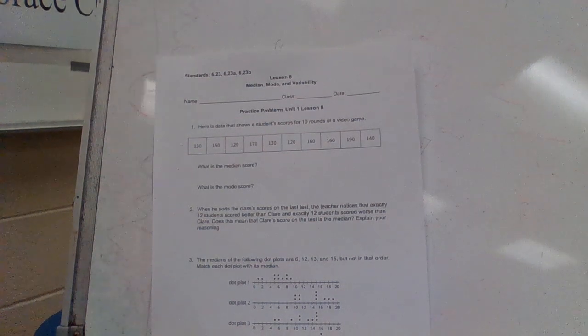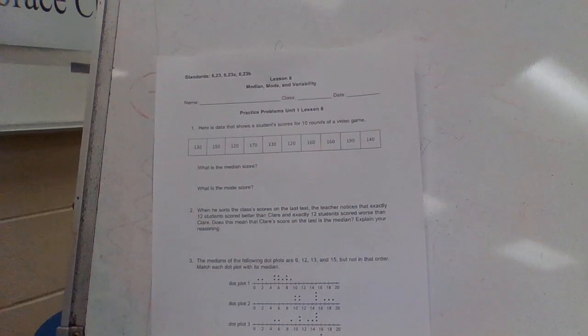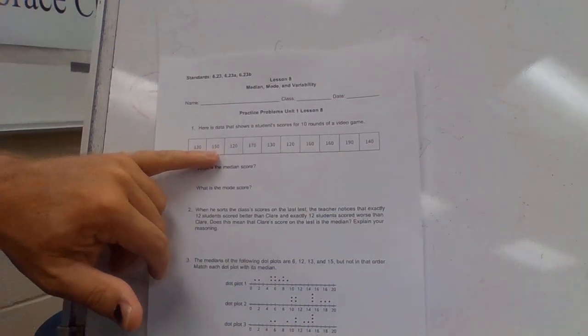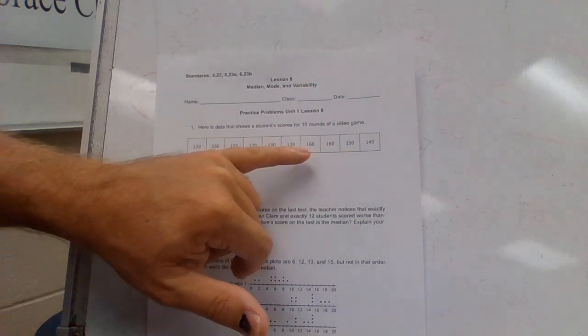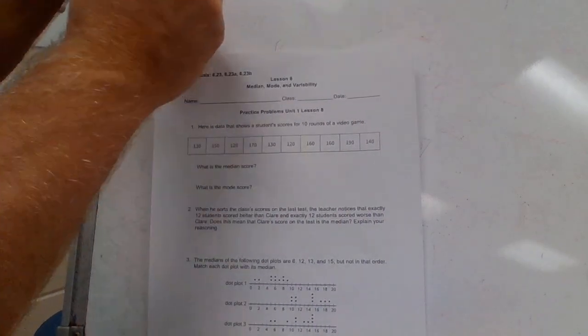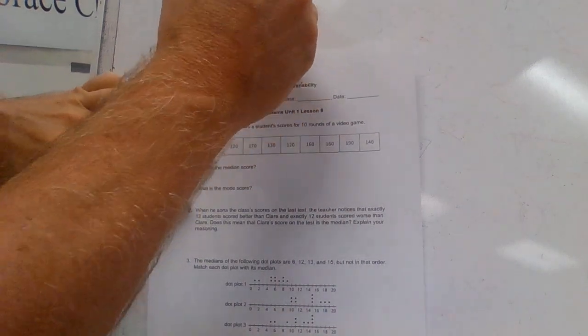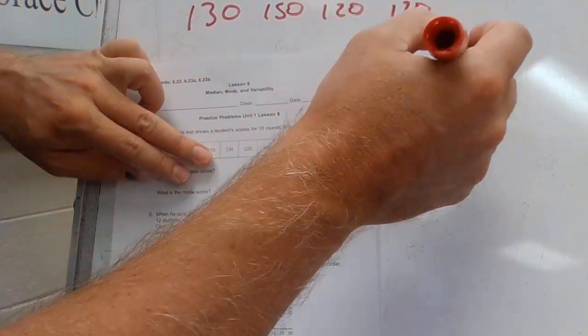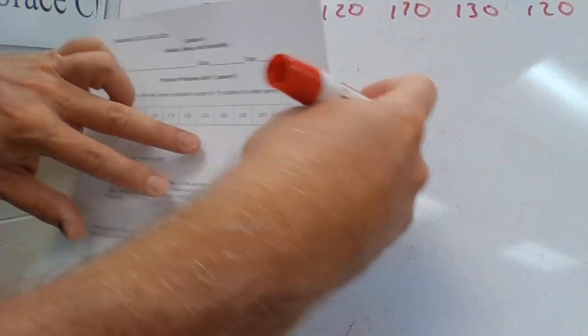Number one says here's data that shows a student's scores for 10 rounds of a video game. We have 130, 150, 120, 170, 130, 120, 160, 160, 190, 140. What's the median score? We know how to do the median.